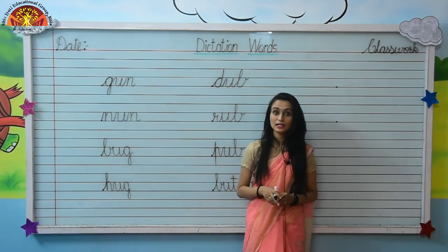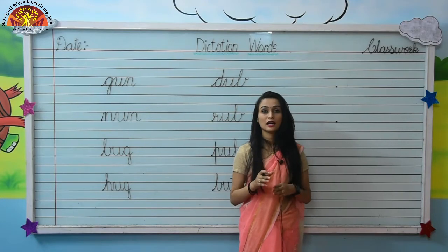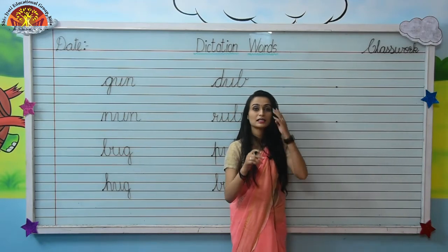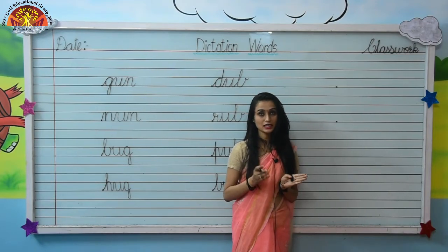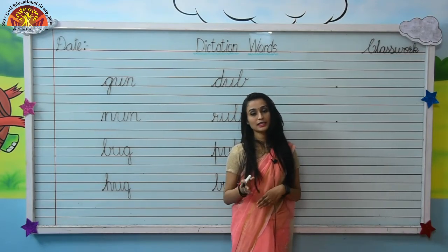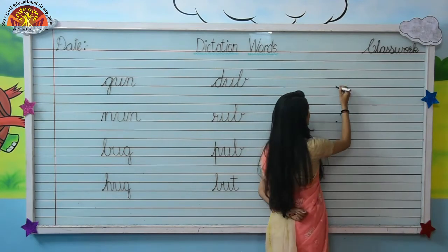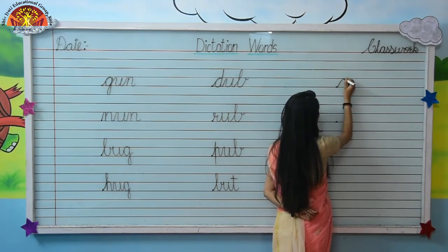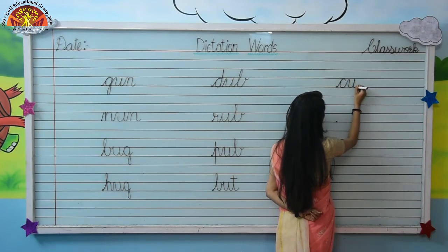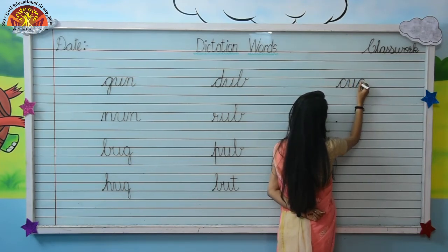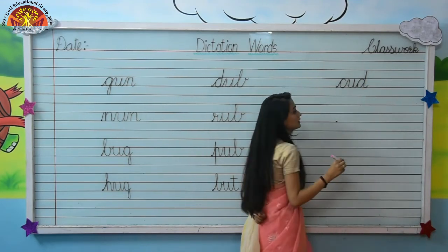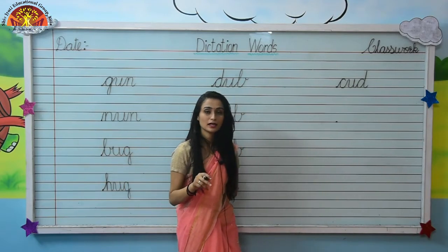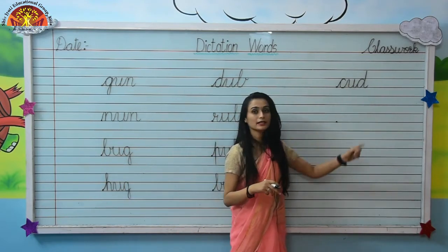Your next word is cud. Spelling of cud is C-U-D, cud. So write down the spelling of cud: C-U-D, cud.